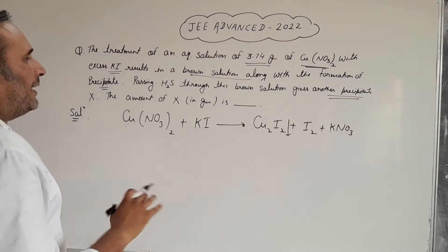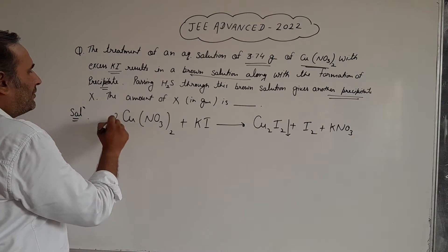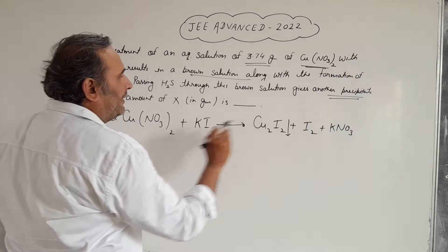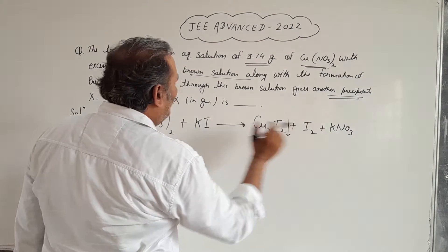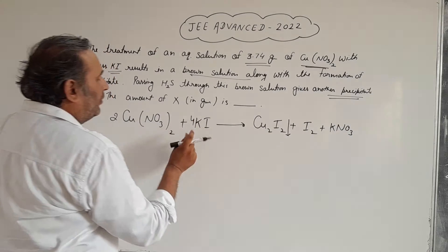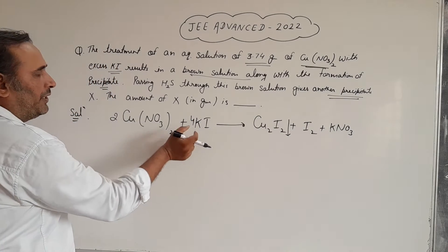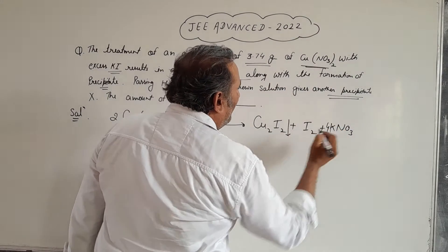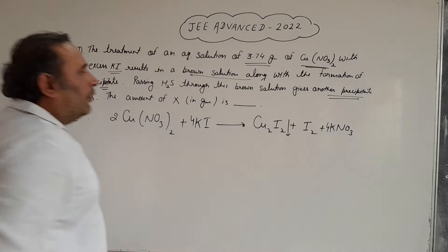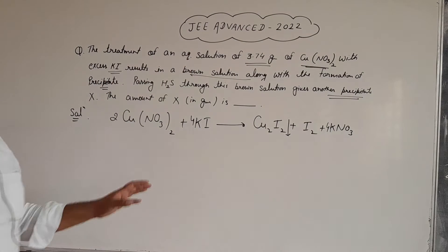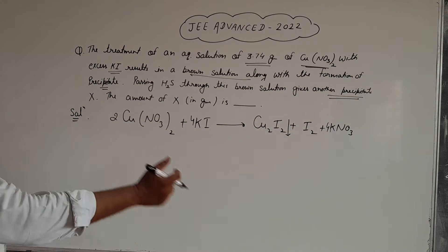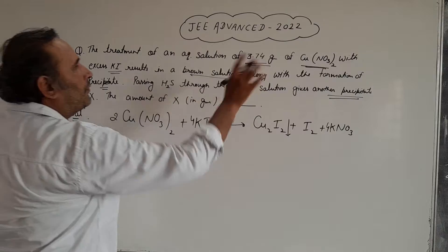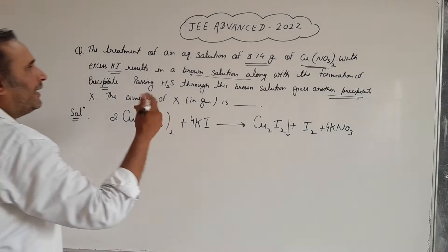Now we can balance it. Copper are 2, that is why there is a coefficient of 2, and iodine — there are 4. That is why we put 4 here, as well as potassium — there are 4, so we put 4 here. That is the balanced chemical equation. Now we can find out the number of moles of copper nitrate we are taking.